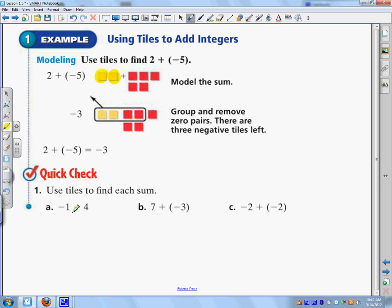So here's a quick check. I'll do A, and then you can try B and C. So A says, use tiles to find each sum. So I have four positive, so I'm going to do four positive. And then I have one negative box. So what you do is you add them together. And so I'm going to cross off one negative and one positive. And I'm left with three positives. So therefore, my answer is positive three.